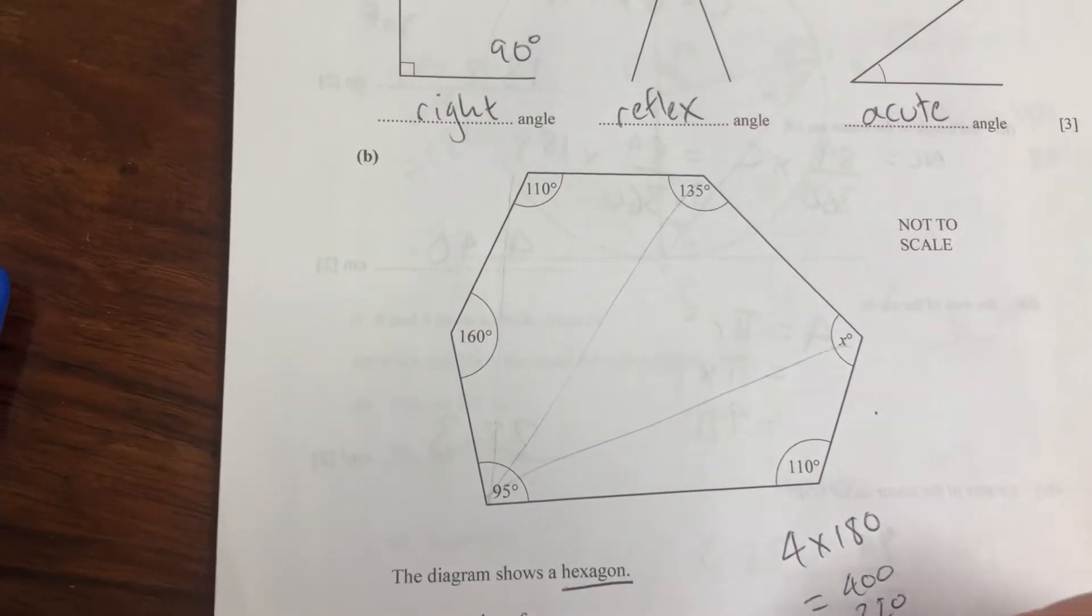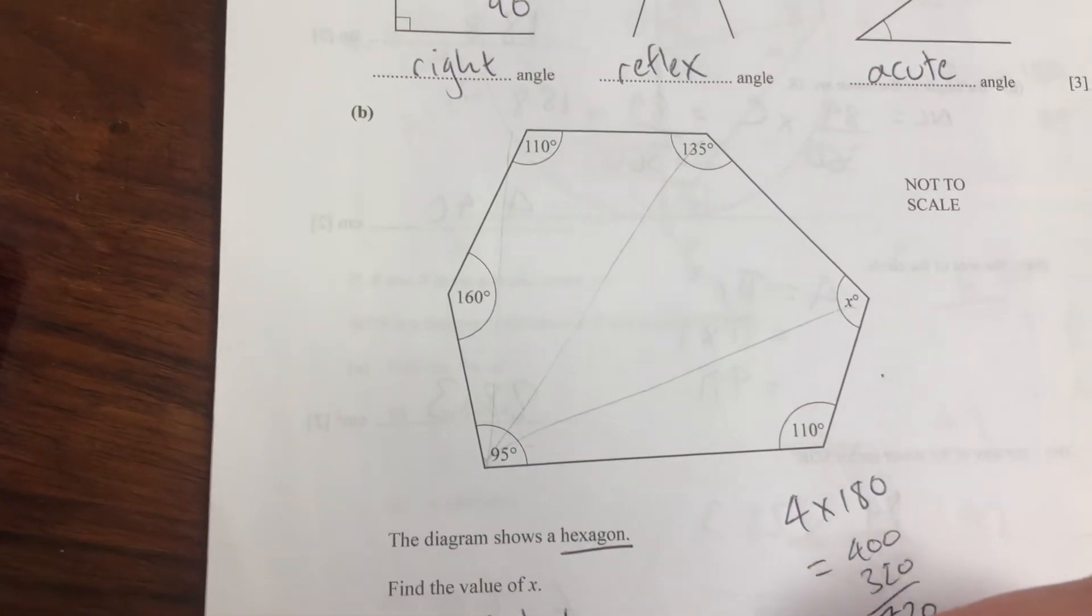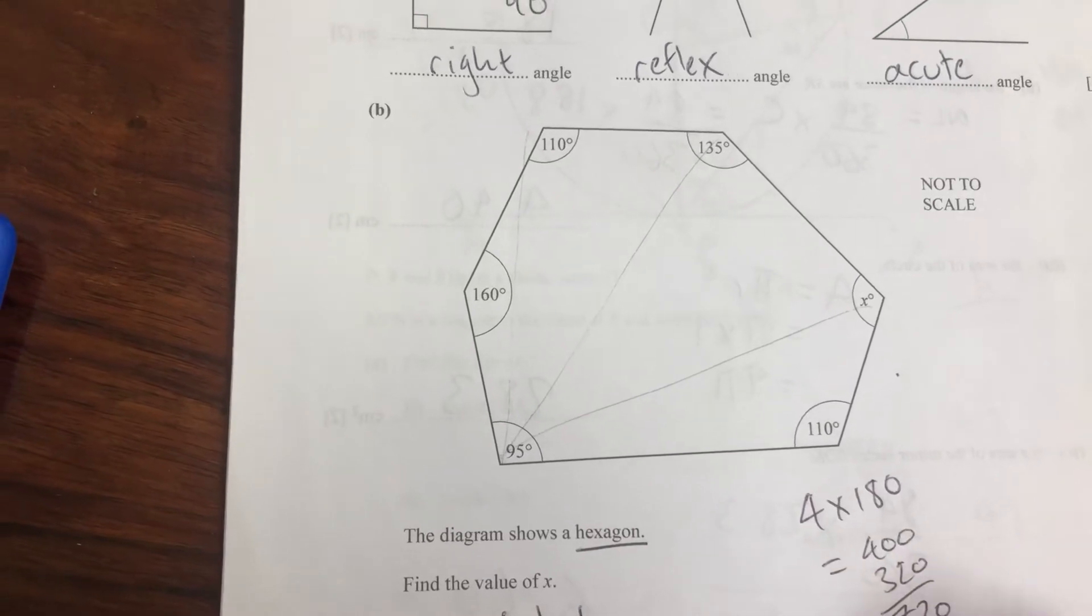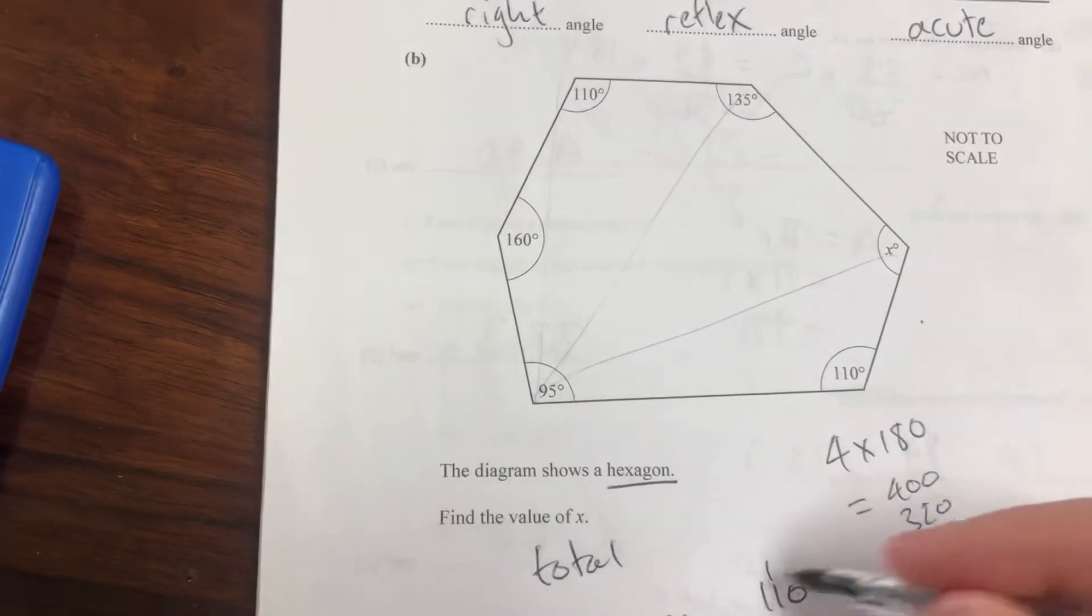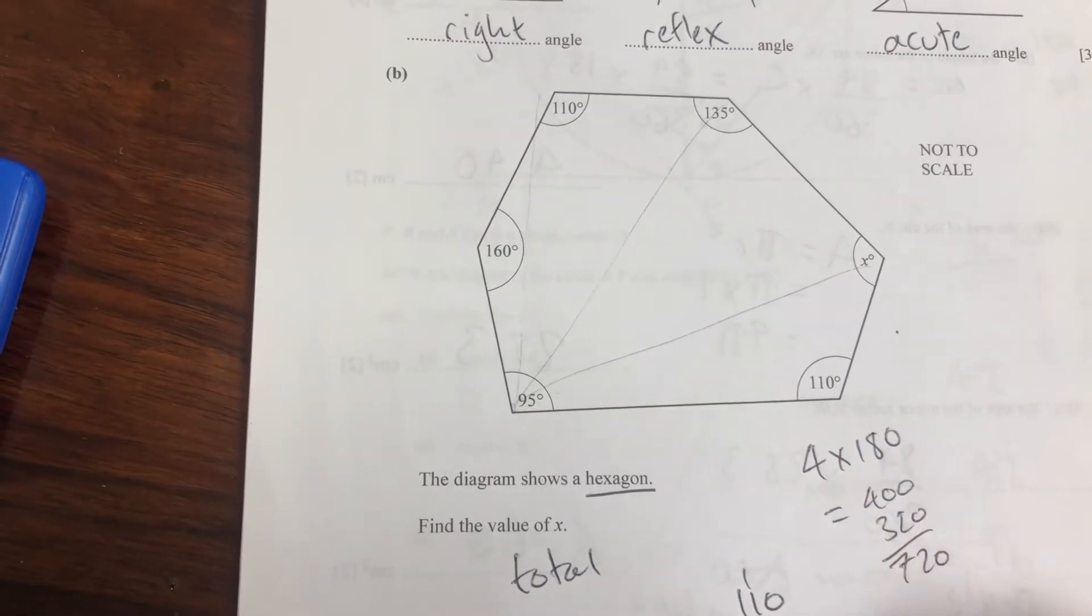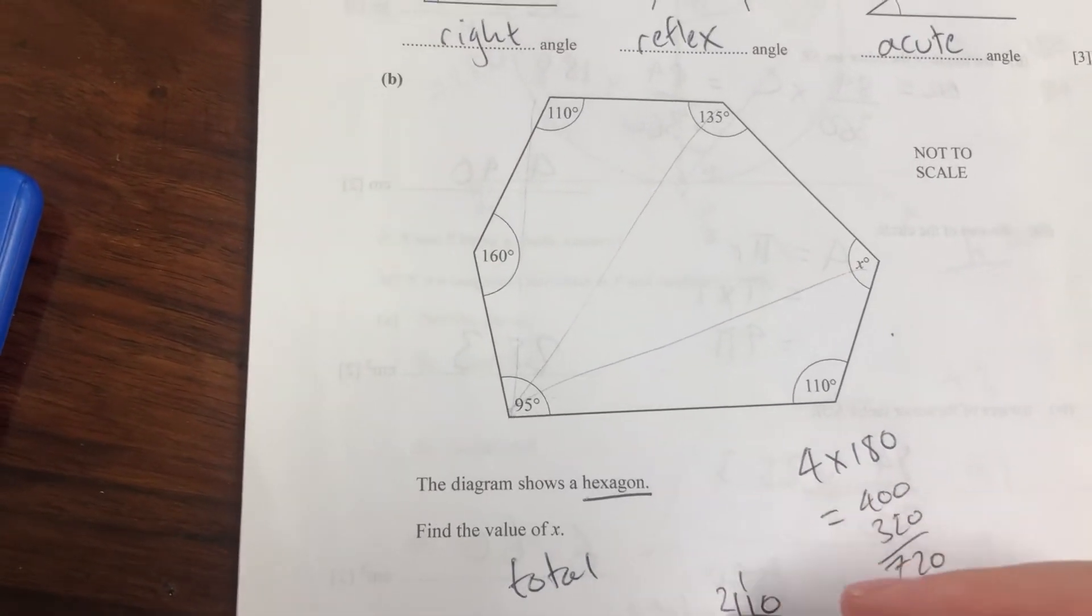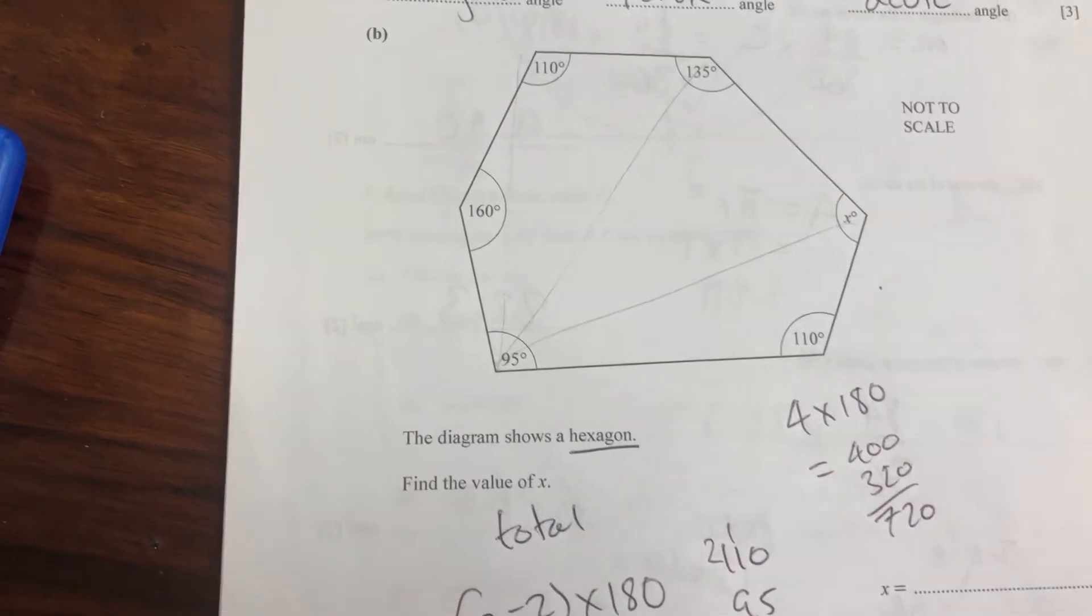Now we're going to add them all up. We know there's 110, 95, 160, 110, 135. Adding these gives 610.